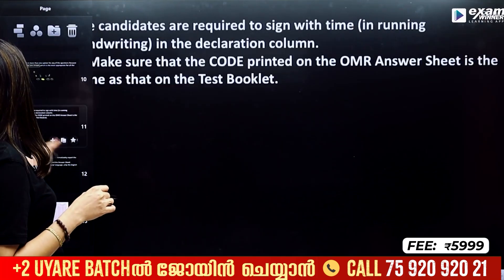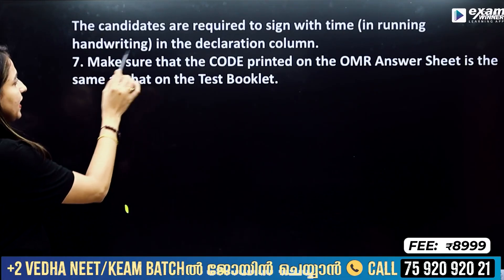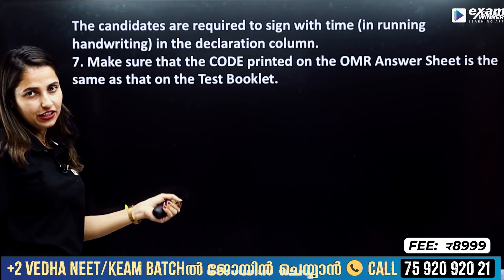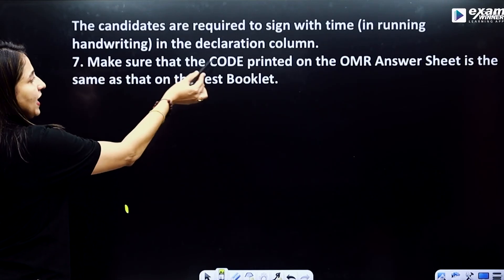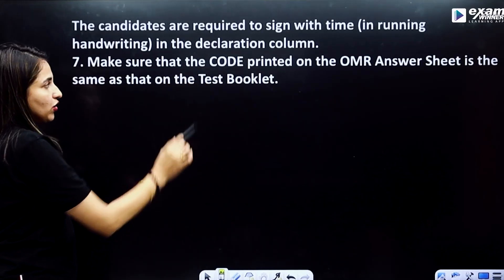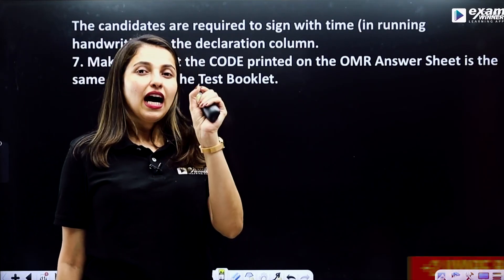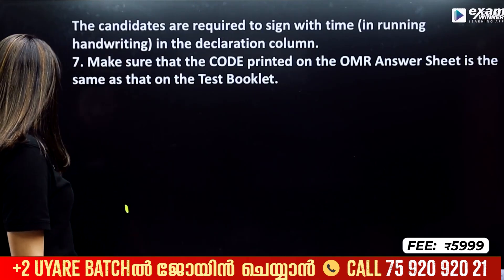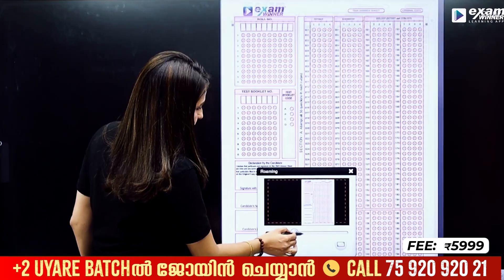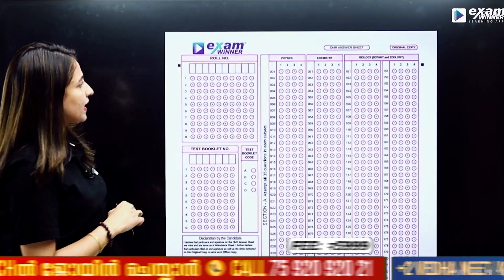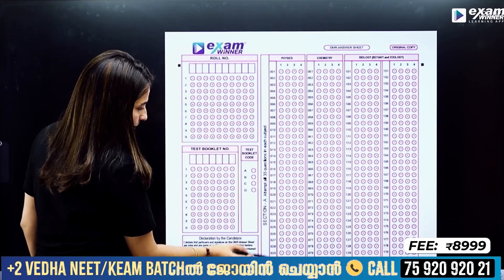The candidates are required to sign with the time — that is, you provide a declaration in your own handwriting. Make sure that the code printed on the OMR sheet is the same as that on the test booklet. Use the same code to verify the booklet number and ensure it matches the sample on the OMR sheet.